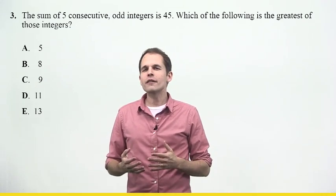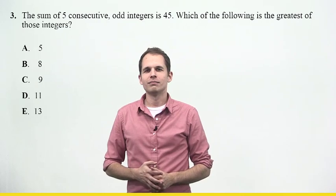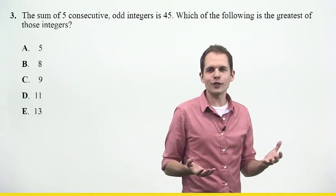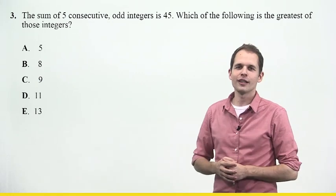And it's asking for the greatest odd integer in that set. Well, right away I can get rid of answer choice B. 8 is not an odd integer, so it can't be the largest odd integer.